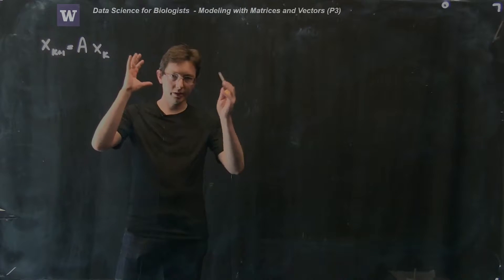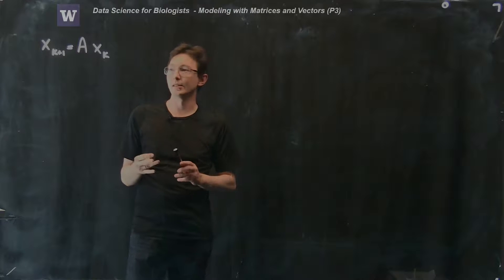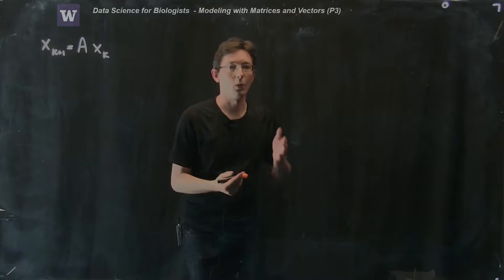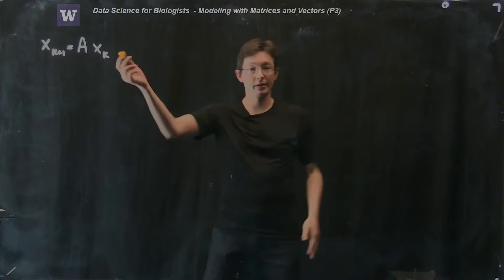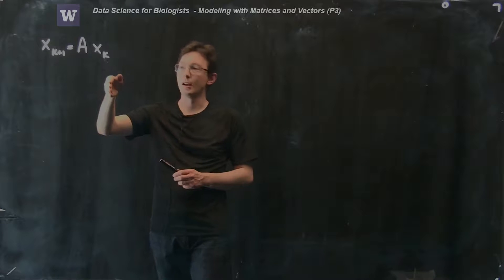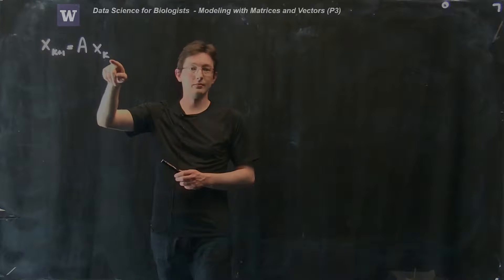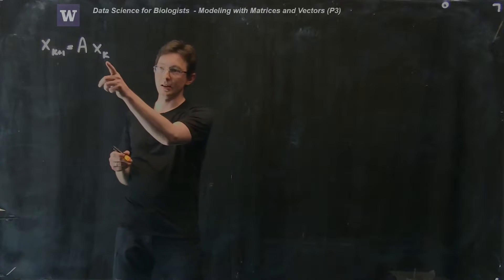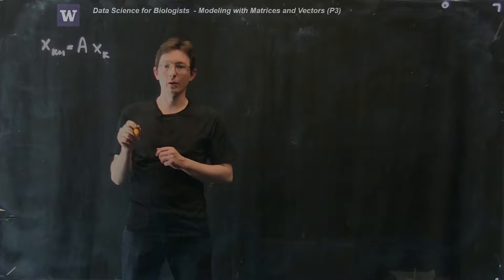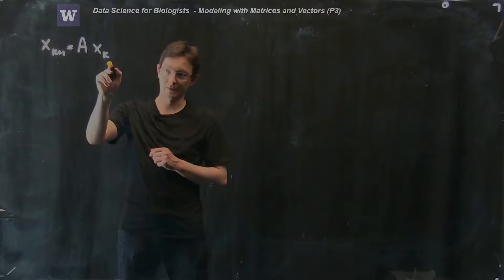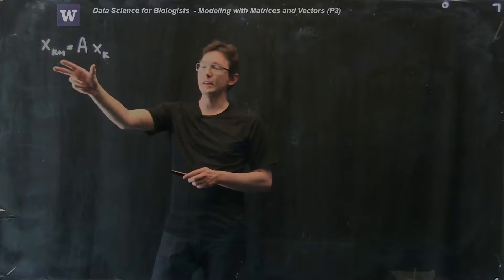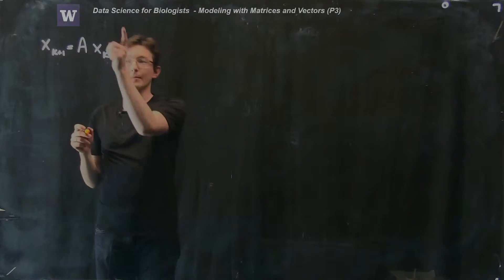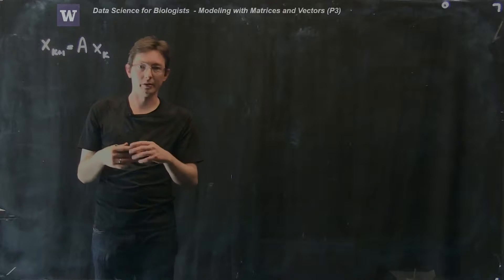The most simple and intuitive way that I think of what this index k means is essentially this index is telling me what time I'm measuring the state x. x is a vector of measurements, and I have this state at time k and at time k+1, and so on and so forth. This could be the kth day, day 4 and day 5, day 6, day 7, day 8, so on and so forth. So this model tells me if I have my state at day k, I can get my state at day k+1, or time k+1.